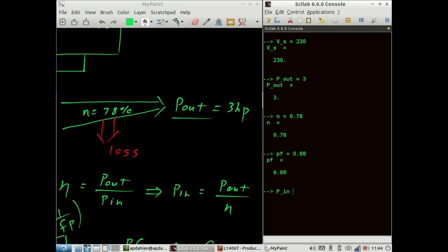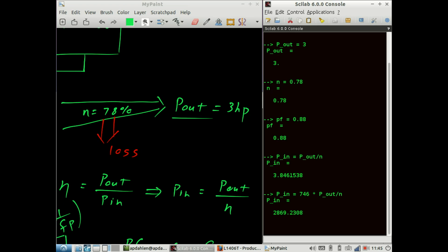Power in is equal to power out divided by efficiency. So that's the power in expressed as horsepower, but we want the power in expressed as watts. So we're going to multiply by 746, because every horsepower is represented by 746 watts.